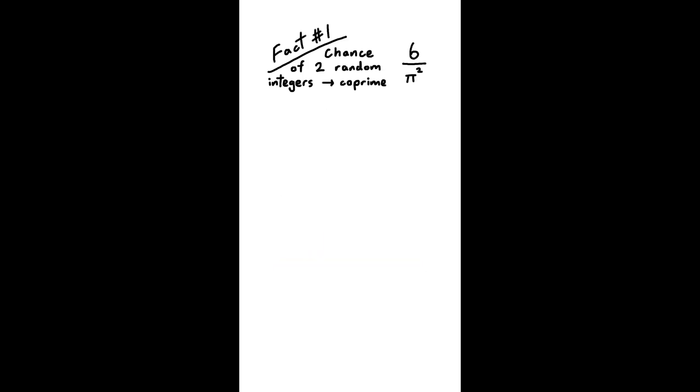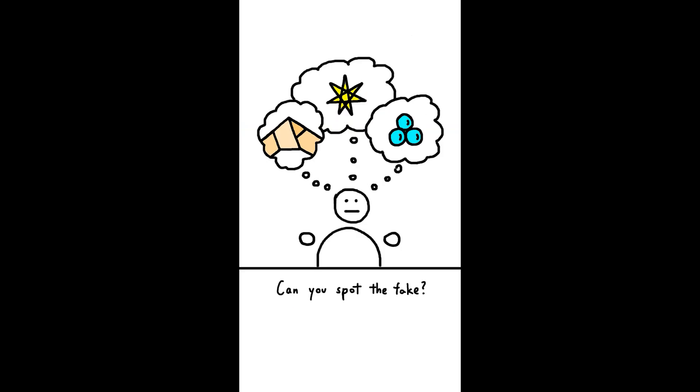The first connection is a lot more complicated, but it has to do with the zeta function, which relates pi to number theory. Two truths and a lie, but with math. Can you spot the fake?